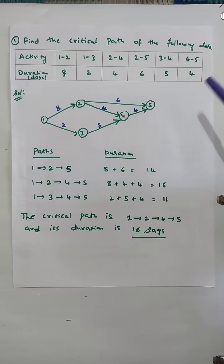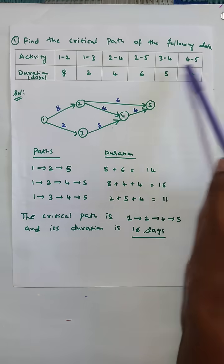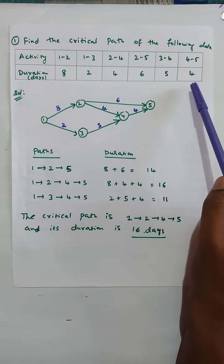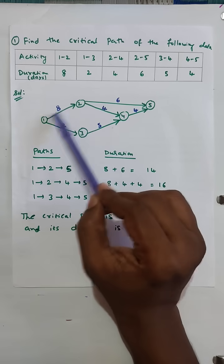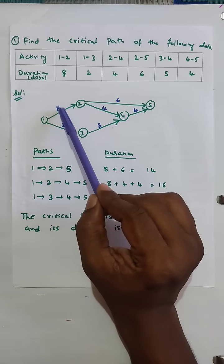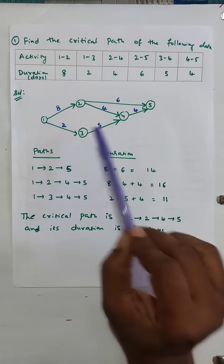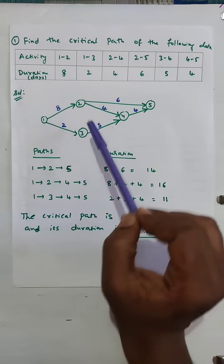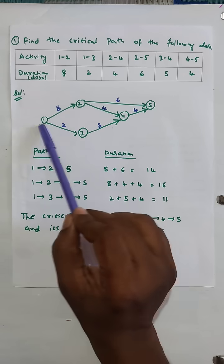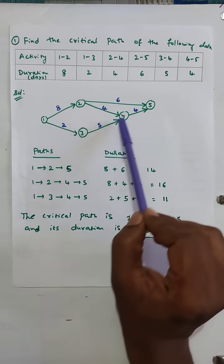How to find the critical path of the following data. In this question, activities are given and the duration is also mentioned. Activity from 1 to 2, 8 is the duration, written in blue color above the arrow mark. If you draw the network diagram, there are three paths possible: 1-2-5, 1-2-4-5, and 1-3-4-5.